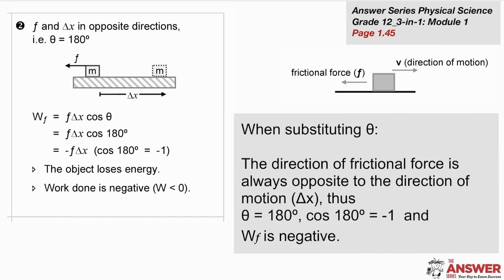However, what if the force was acting in the opposite direction? Friction is a good example. We have a frictional force acting in this direction, we have delta x going in this direction and the angle between those two is 180 degrees. 180 degrees if we take the cosine of that is minus one and so that object loses energy and the work is negative.